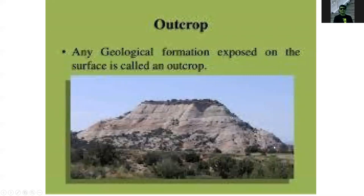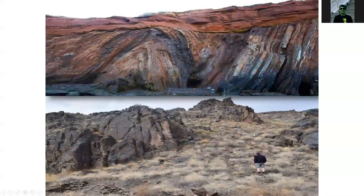A geological outcrop exposes solid rock above the surface of the earth. These outcrops are all exposed solid rock — because over time, the soft soil was eroded and removed, thereby exposing the solid rocks, which are now called outcrops.